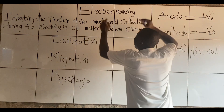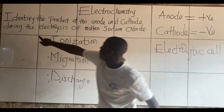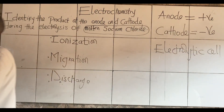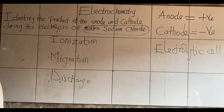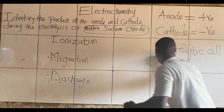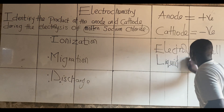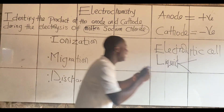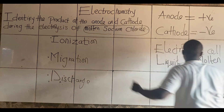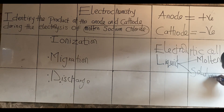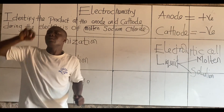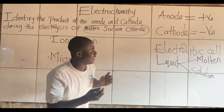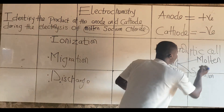I read the question: identify the product at the anode and cathode during the electrolysis of molten sodium chloride. So we have to know what is this molten sodium chloride. I saw the word molten. I told you guys that electrolytes are compounds that conduct electricity when they are in liquid form. And whenever we are discussing a compound conducting electricity in liquid form, it can mean two things — either the compound is molten, or it is in the form of a solution.